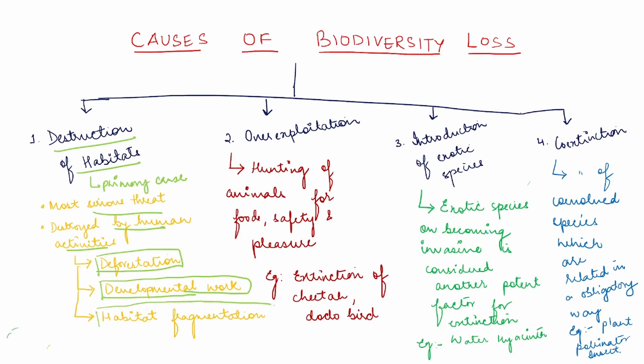The third cause is habitat fragmentation. Habitat fragmentation is basically where large habitats are broken into small fragments. It reduces the core area and increases the edge area. Mammals and birds require large territories, so destroying large habitats also causes the loss of biodiversity.